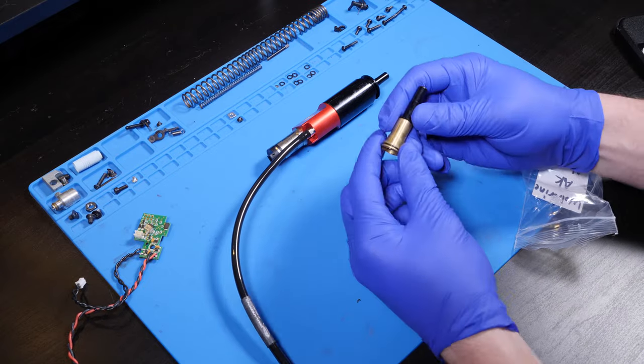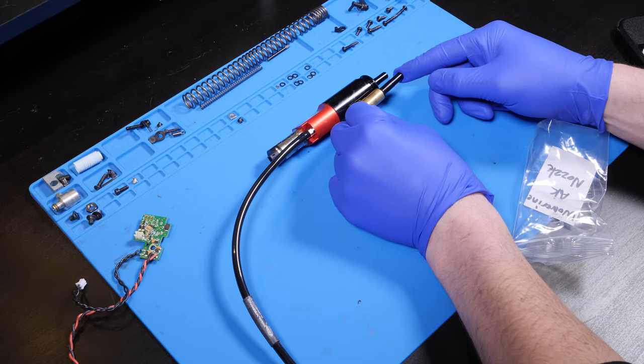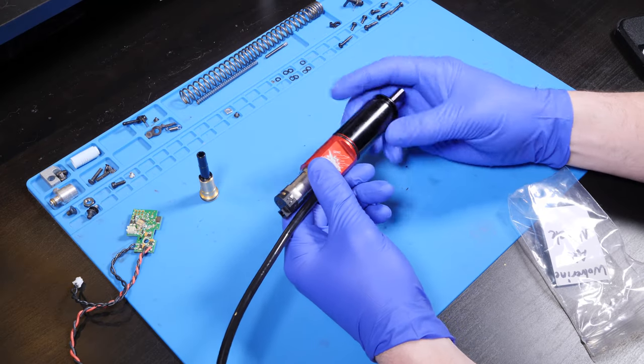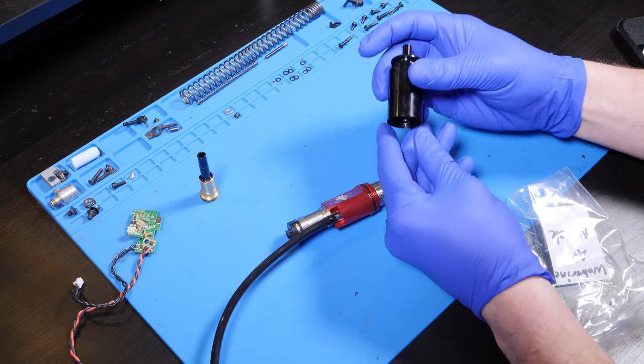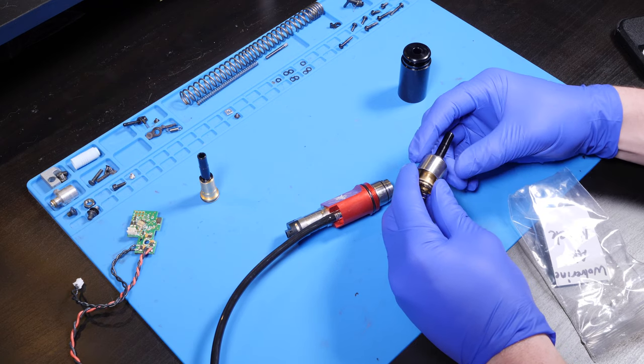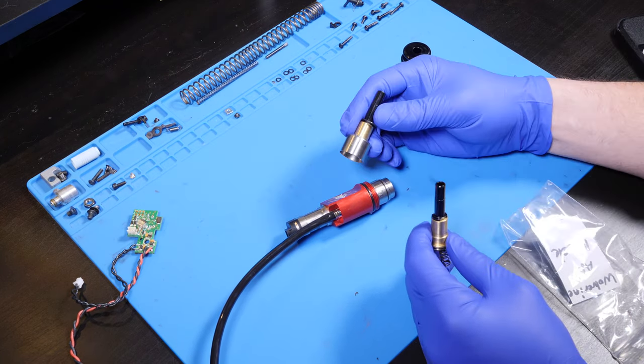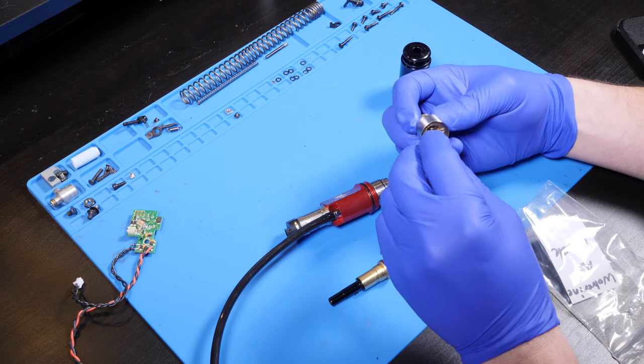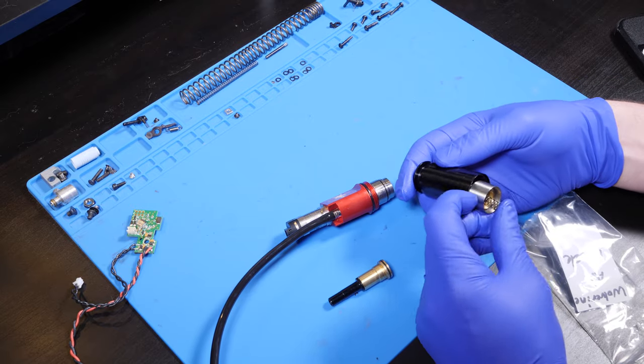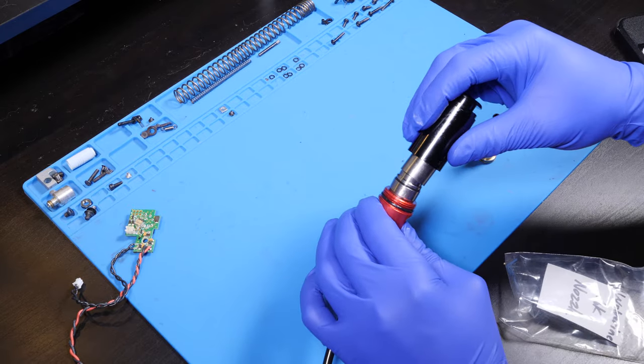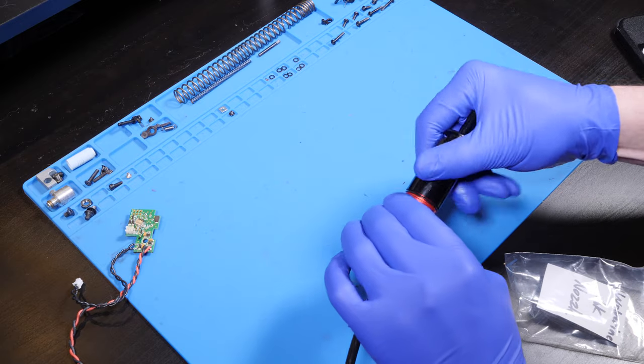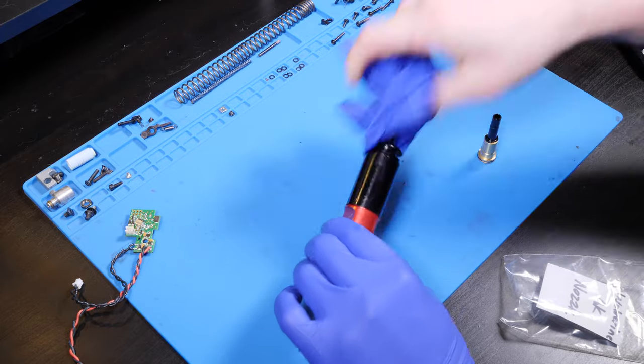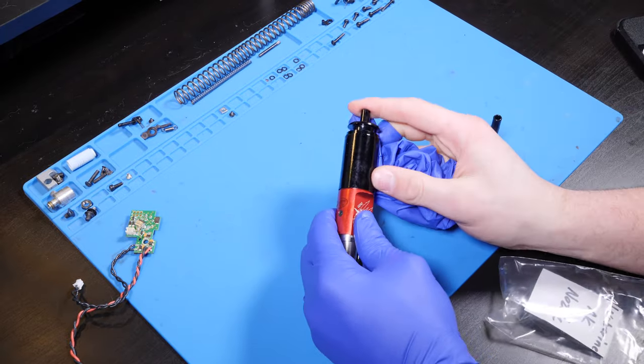This is just one of those instances where the KWA QRF differs from most standard M4 platforms. To install the AK nozzle, simply twist off the end of the cylinder, pull out the stock nozzle, transfer over the retention piece, o-ring, and spring into the AK nozzle, and then twist the cylinder back together.